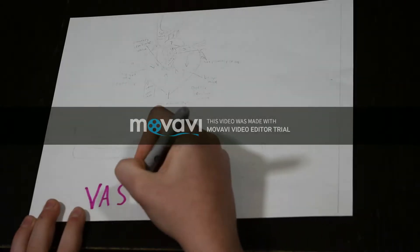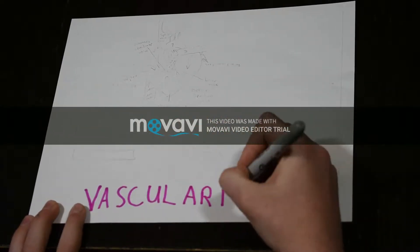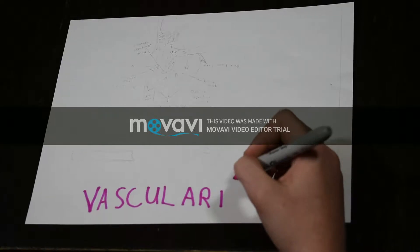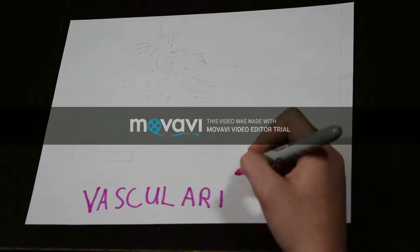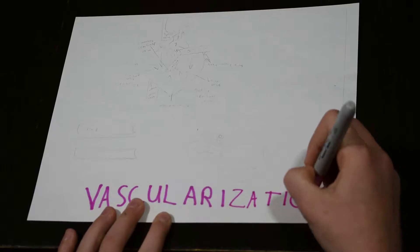Hi, I'm AnatomyKid. Welcome back to my channel. Today I'm going to be talking about vascularization, which is basically the circulatory system as well as the lymphoid system.